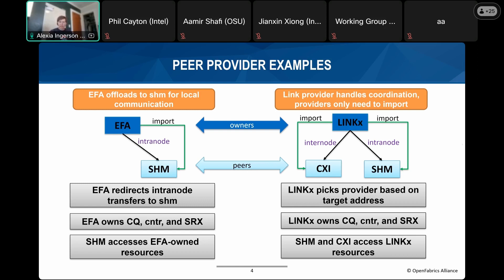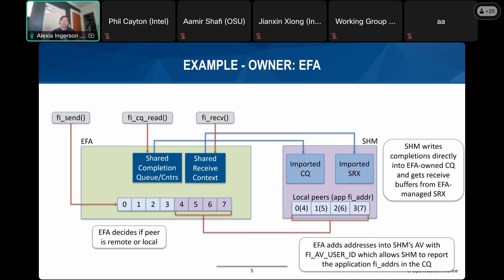In the EFA example, the shared completion queues, counters, and shared receive context all live in the EFA provider, but shmem can access them because they were imported by EFA. The importance of sharing addressing data is key: according to the application, local addresses are four, five, six, and seven, but when EFA inserts those addresses into shmem, shmem assigns peers addresses zero, one, two, and three. EFA needs a way to tell shmem what address to expect and what to report back when writing a completion or matching a receive buffer. This is done through the new fi_av_user_id flag when inserting an address into the shmem AV.